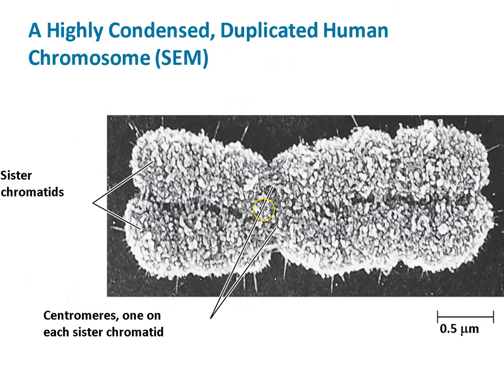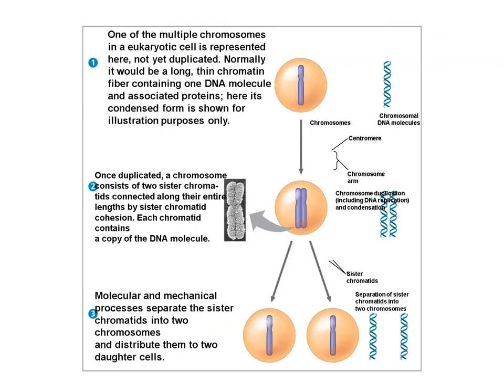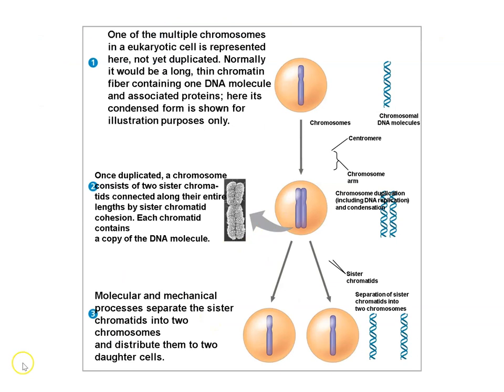Here's a picture of sister chromatids. Here's one chromosome that has been duplicated into two. The centromere is on each sister chromatid because they have to separate. This was one chromosome that duplicated and is now two sister chromatids. Once the sisters separate, they are considered to be individual chromosomes.